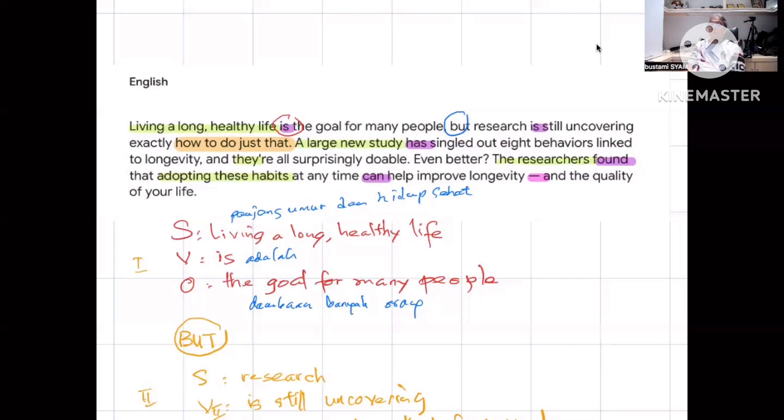Here there's a dash. Dash is additional information. Instead of a dash, you can put a comma, or another means of additional information like a word or phrase in brackets. So in this case, he uses a dash, 'and the quality of your life'.